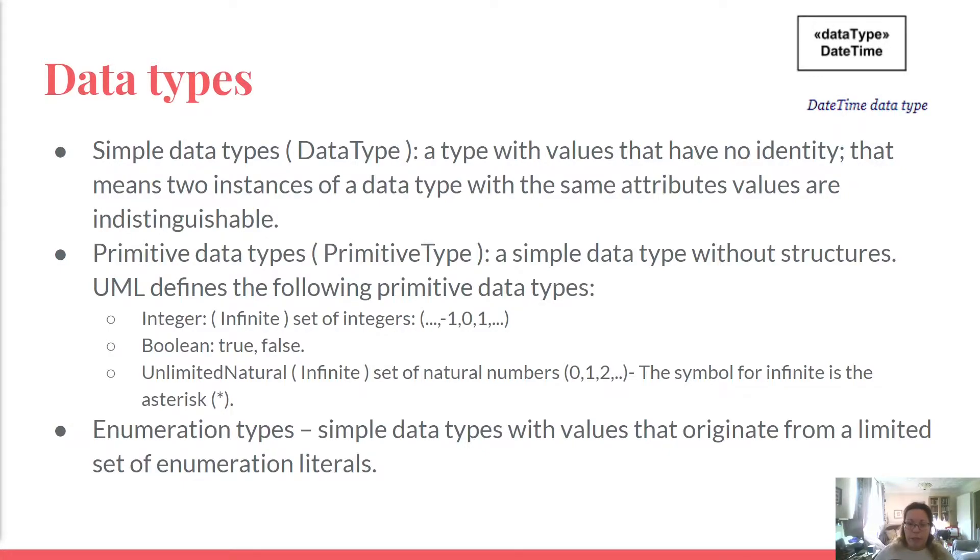An enumeration is a data type whose values are enumerated in a model as user-defined enumeration literals and can be shown using the classifier notation rectangle with a keyword enumeration.